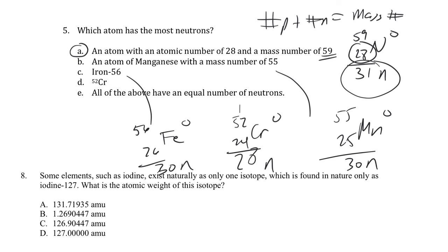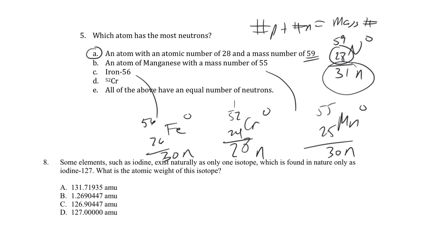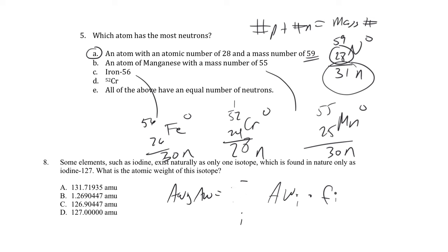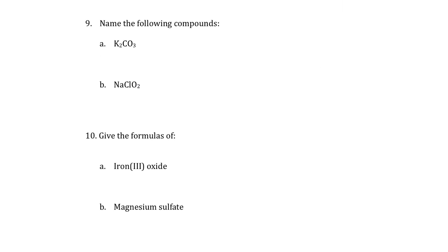The average atomic weight listed in the periodic table is the sum of each isotope's atomic weight times its natural abundance fraction, summed over all isotopes. Iodine exists as only one isotope, so it's 100% that mass. Looking up iodine on the periodic table gives 126.90447 AMU — answer C. It's not exactly 127 AMU.